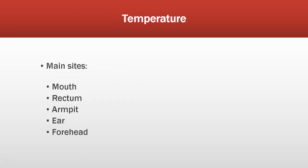Temperature is the first vital sign that you will take. There are five different types of temperature we can take. You could do an oral temperature, which is taken under the tongue with the mouth closed. A rectal temperature, which is taken via the rectum. An axillary temperature, which is conducted under the armpit. A tympanic temperature, which is obtained in the inner ear. And then a temporal temperature, which is taken by running a thermometer over the forehead and temporal artery.